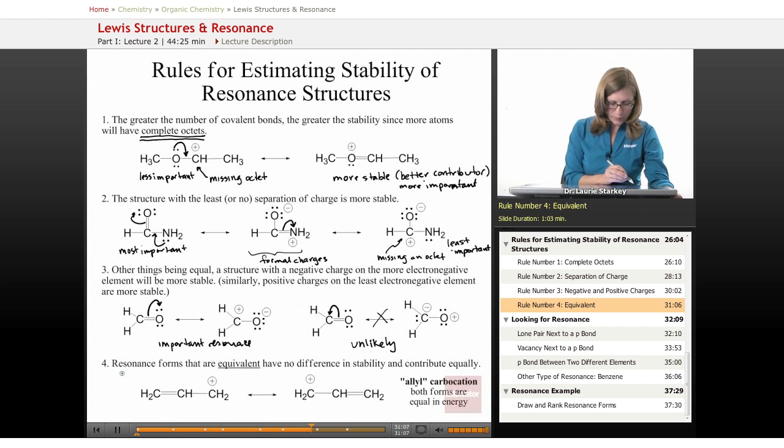And then finally, resonance forms that are equivalent have no difference in stability and contribute equally. So sometimes we might compare two resonance forms and not find any significant difference in their structure. For example, this guy is known as the allyl carbocation. And they both have one double bond and one carbon missing an octet. And so because they have equal features of stability, they're going to be equal in energy and therefore contribute equally to the resonance hybrid.